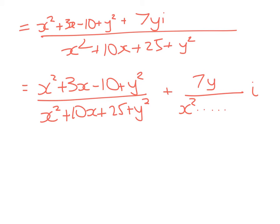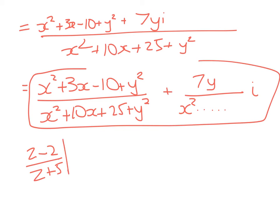So what I've got for this z minus 2 over z plus 5 is x squared plus 3x minus 10 plus y squared plus 7yi, and it's all over that denominator, which is x squared plus 10x plus 25 plus y squared. So we're looking at this, and what we've done here is we've said when we've got z minus 2 over z plus 5 for any complex number, if we do that, take 2 off and divide it by the number plus 5, we get this.